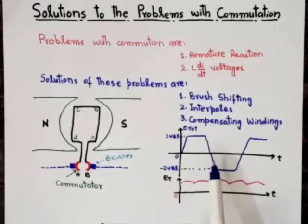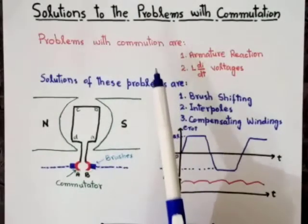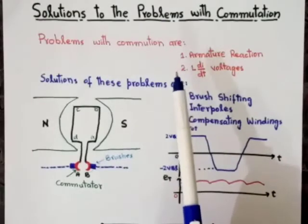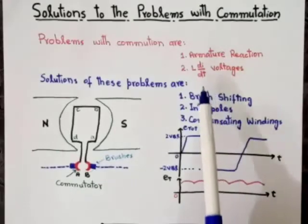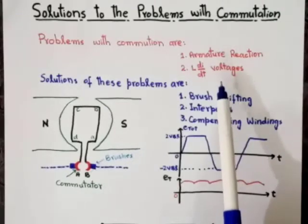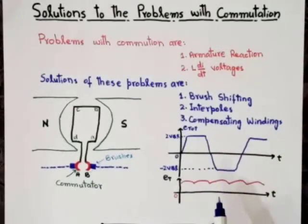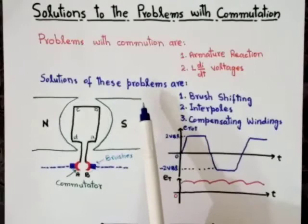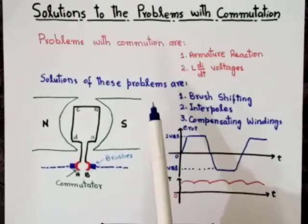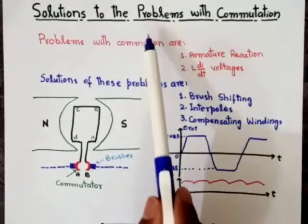During this commutation, that is AC to DC conversion, there are some problems that occur — which we discussed in the last lecture. The first one is armature reaction and the second one is L·di/dt voltages. These two issues severely affect the commutation process. In this lecture, we will discuss the solutions to these problems.